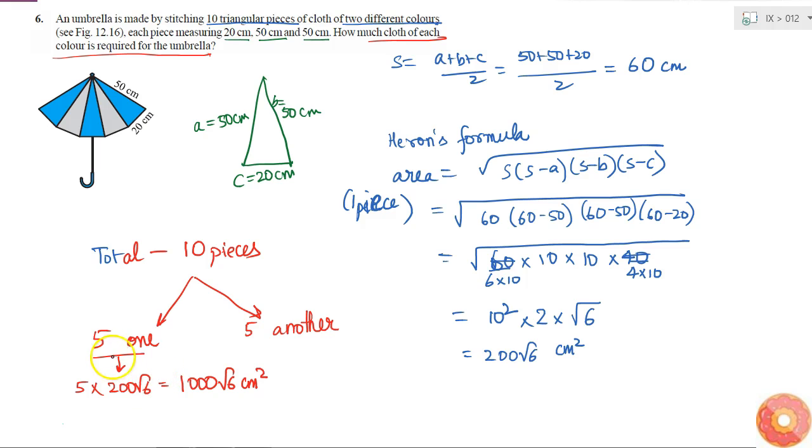This is the area of one color of cloth. Similarly for the other color of cloth also the area will be 1000 root 6 cm square.